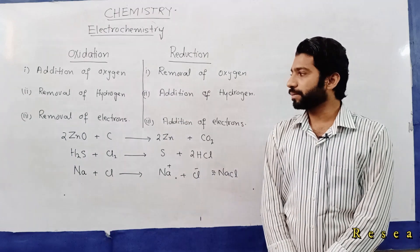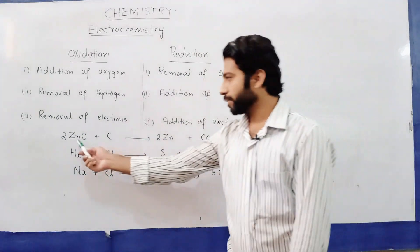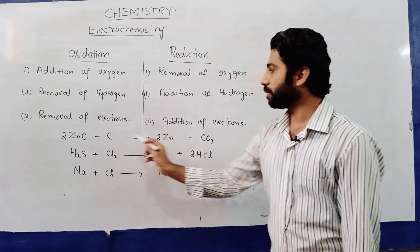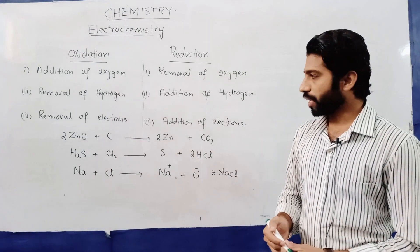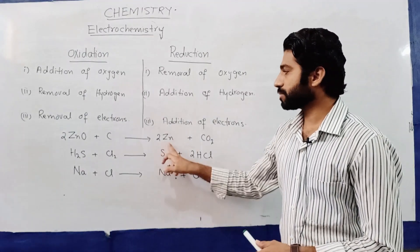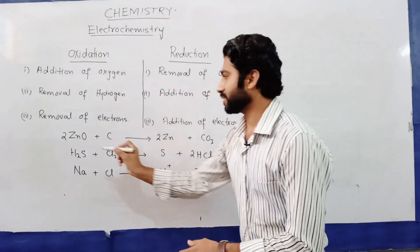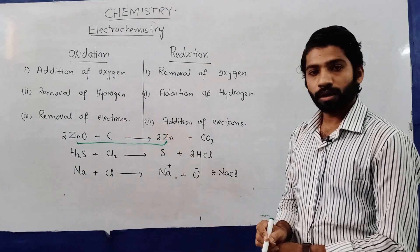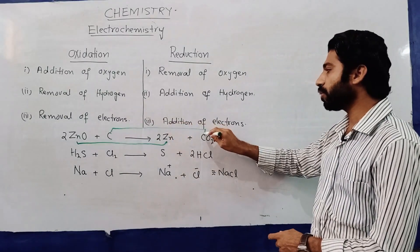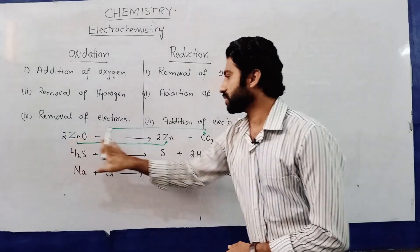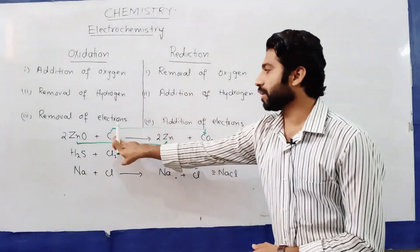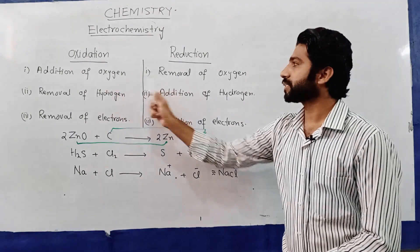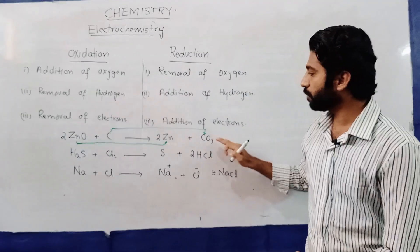Okay students, we will discuss this in the first example. Zinc oxide, ZnO, can react with carbon C to form zinc Zn and carbon dioxide CO2. Here, zinc oxide has oxygen removed, so that step is reduction. And carbon has oxygen added to it, so this step is known as oxidation step. The first two points about oxidation and reduction are covered in this first example.